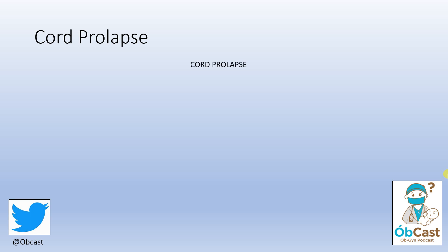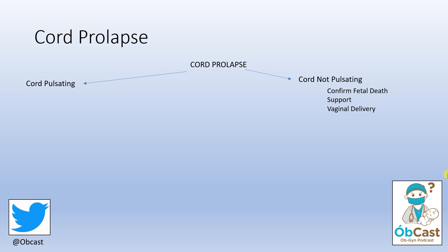A clinical algorithm for cord prolapse has two initial decision streams: firstly, if the cord is pulsating, and secondly, if the cord is not pulsating. For the cord not pulsating, your goals will be to confirm fetal death, organise all the necessary supports for the woman, and these women will often, if there are no contraindications, go on to have a vaginal delivery later on. I can't say enough to emphasise how tragic this kind of event would be.